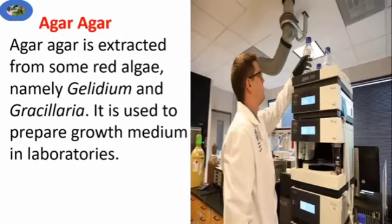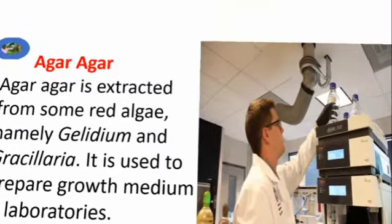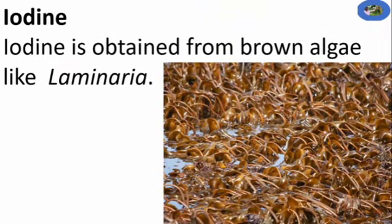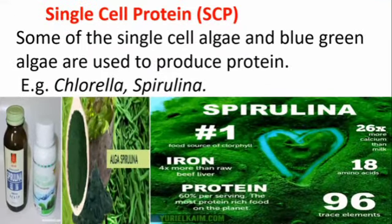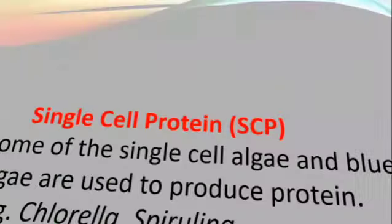Agar-agar is extracted from red algae, namely Gelidium and Gracilaria. It is used to prepare growth medium in laboratories. Iodine is obtained from brown algae like Laminaria. During space travel, Chlorella algae are carried to reduce carbon dioxide and decompose human waste. Single cell protein is obtained from Chlorella and Spirulina. Thank you for watching — we will continue the remaining topics in the next section.